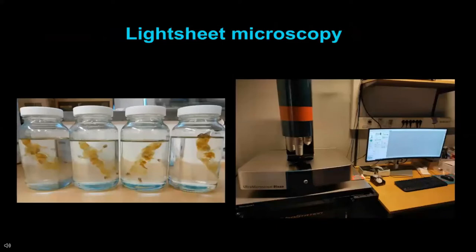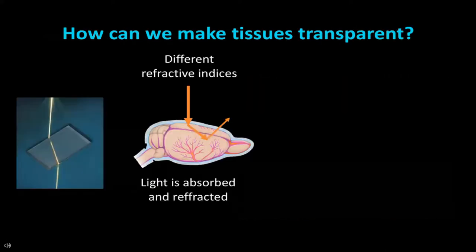Now to some of the light sheet studies we did. We have some cleared mice and our UltraMicroscope Blaze light sheet microscope. How do we make tissues transparent? Or we can ask: why are tissues not transparent?